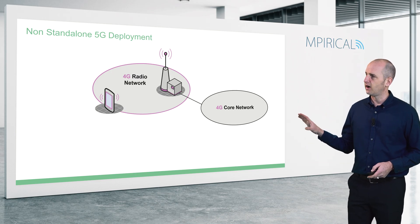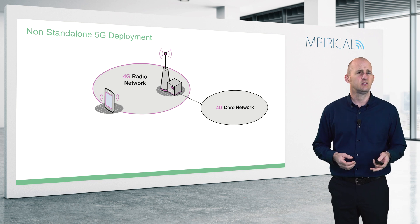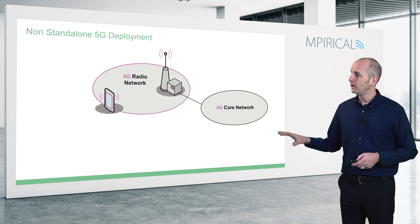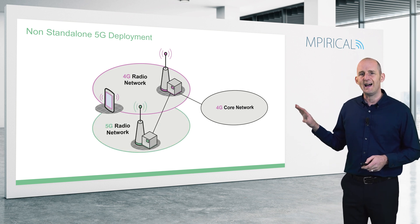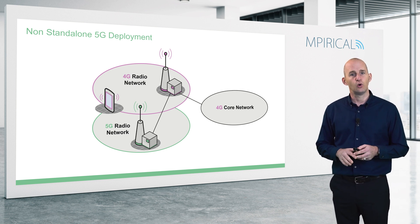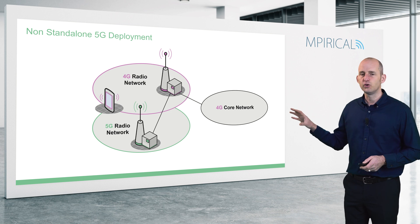When you hear the term non-standalone 5G, what does the network architecture actually look like? To deploy a non-standalone 5G network — also abbreviated as NSA — we actually start with a 4G network and add the 5G radio element only. We're still using the 4G core network, which has implications for things like security and control. Ultimately, we're still using LTE or 4G methodologies for that.